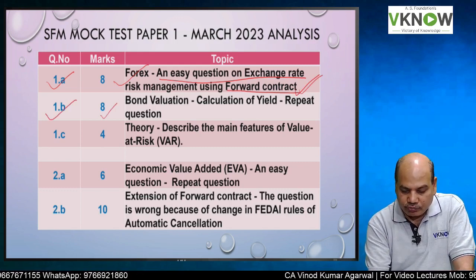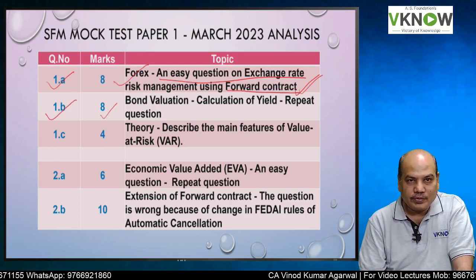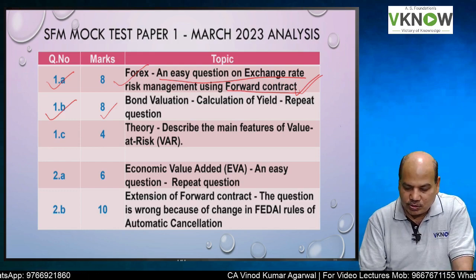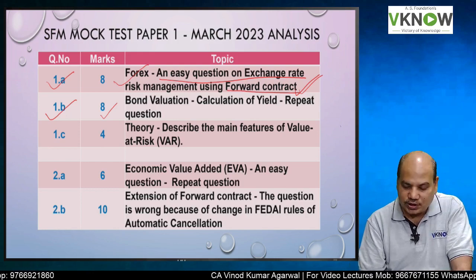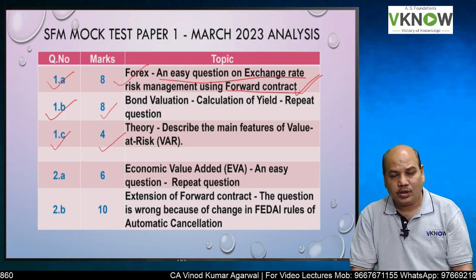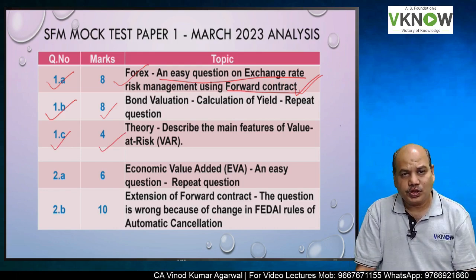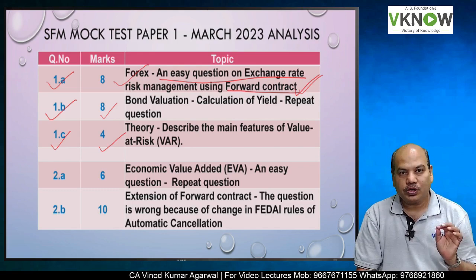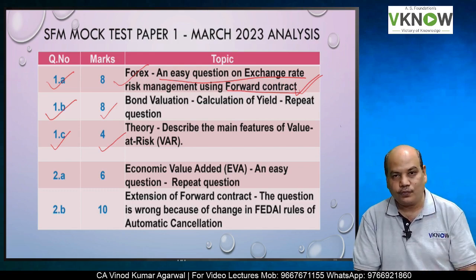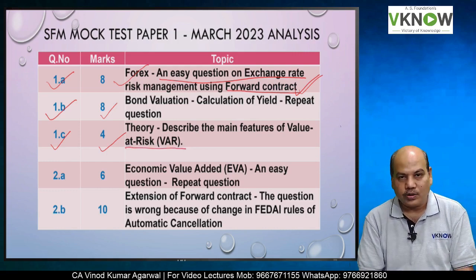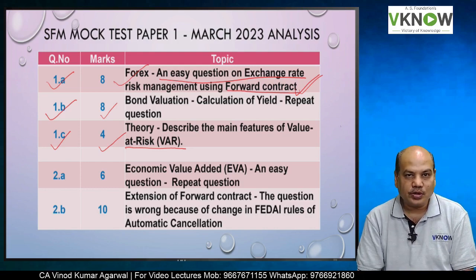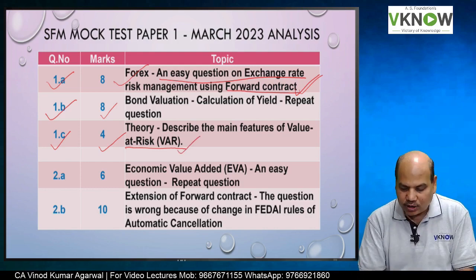Question 1B for 8 marks was again a very easy question on bond valuation — a repeat question, with similar questions from ICAI publications. As you know, in SFM every question has one theory question for 4 marks. In question 1C, the theory question was on Value at Risk: describe the main features of Value at Risk. This is given in the ICAI study material only and is very easy to write.